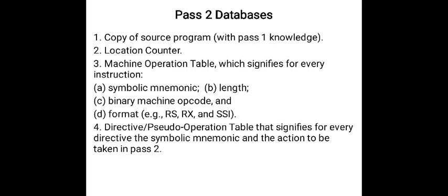First, when we are working with Pass 2 of an assembler, we should have a copy of the source program with Pass 1 knowledge. We have already learnt that during the end of Pass 1, the value will be stored and it will be used by Pass 2. Along with that, the very important thing is to keep track of the instruction values, we need to have the value of the location counter.